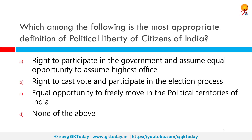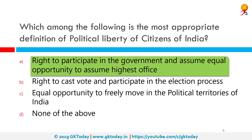Which among the following is the most appropriate definition of political liberty of citizens of India? The correct answer is the right to participate in government and to assume equal opportunity to assume the highest office. The rights to life and personal liberty apply to persons of any nationality, while others such as freedom of speech and expression are applicable only to citizens of India including non-resident Indian citizens. Political liberty however ensures our participation in government and our right to assume the highest offices.